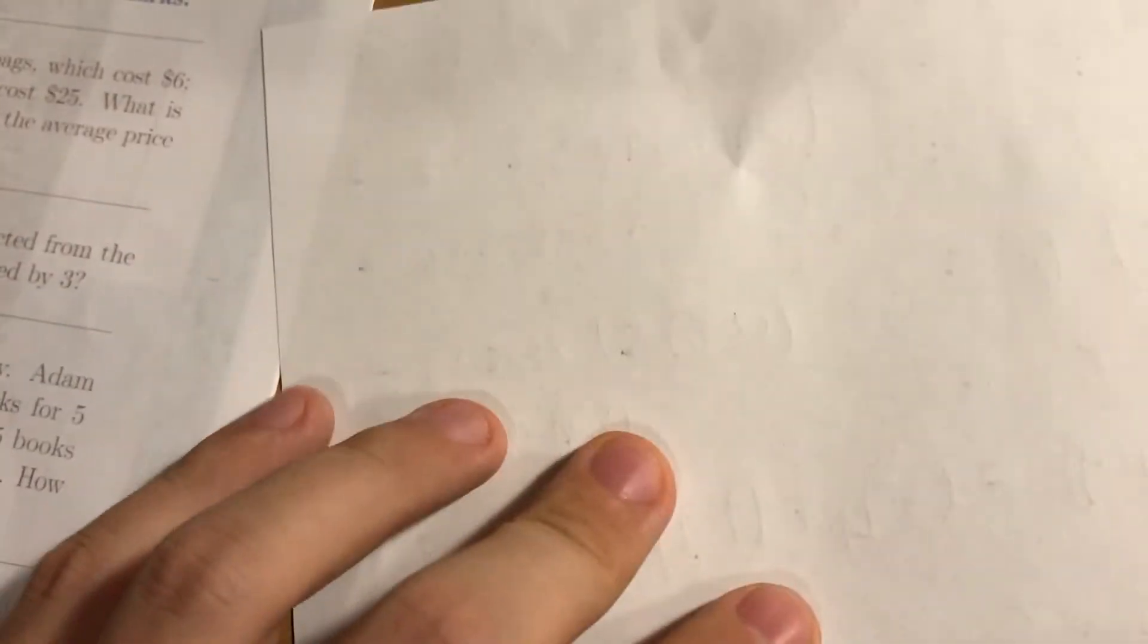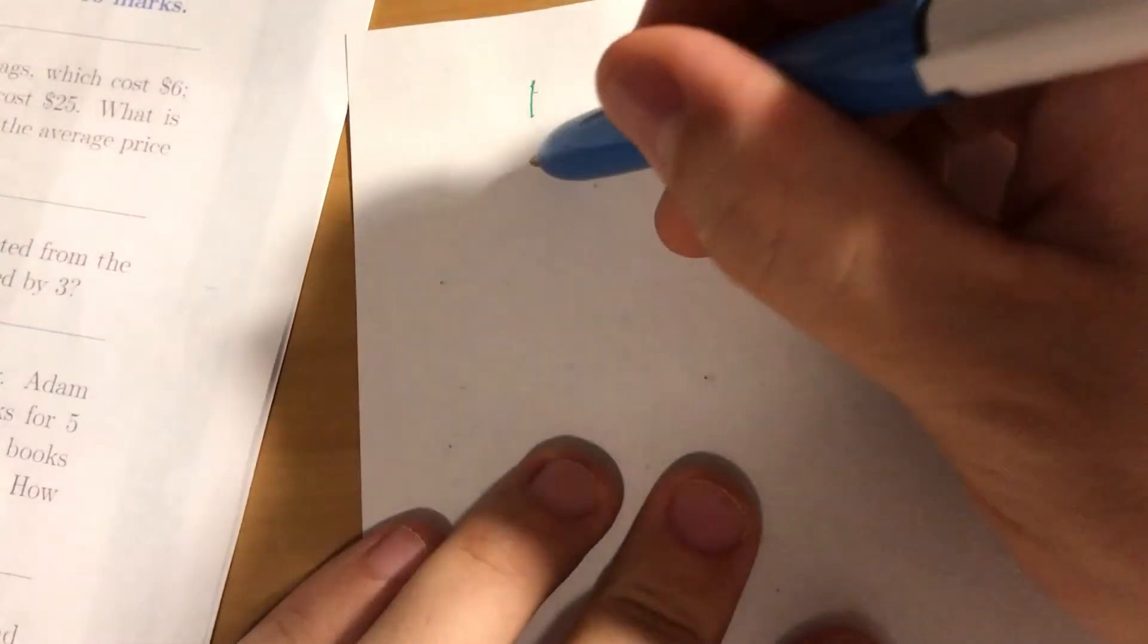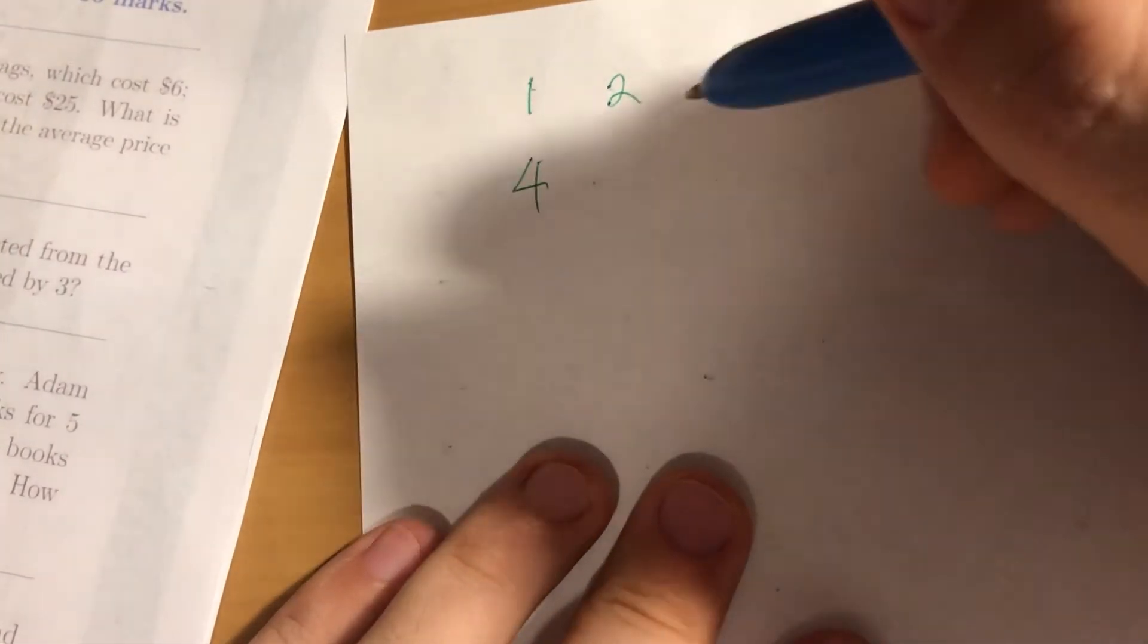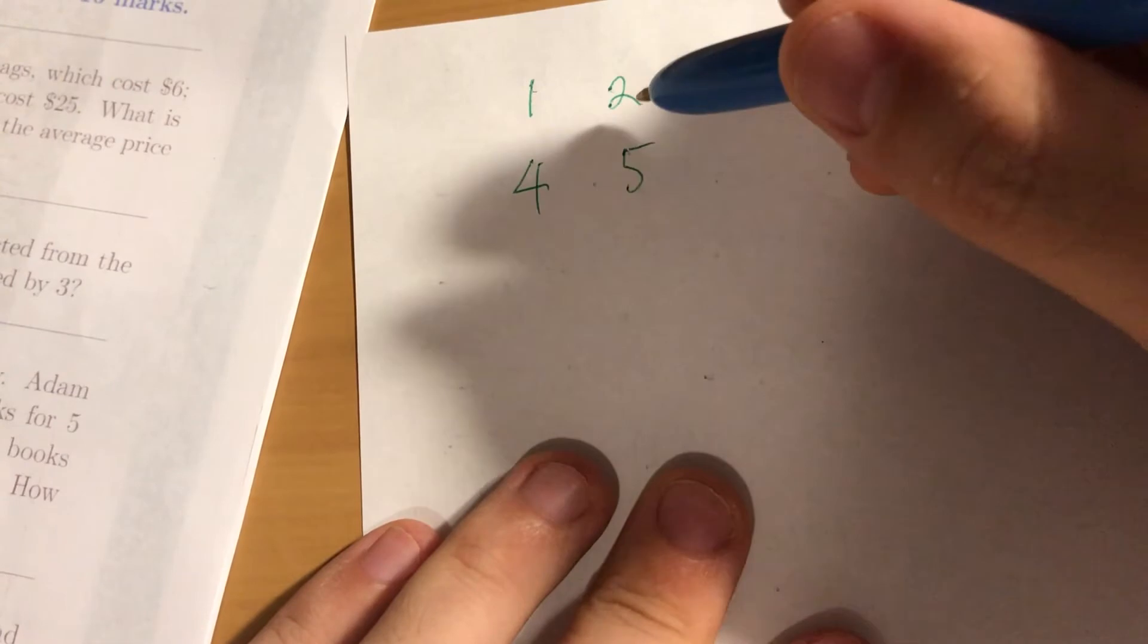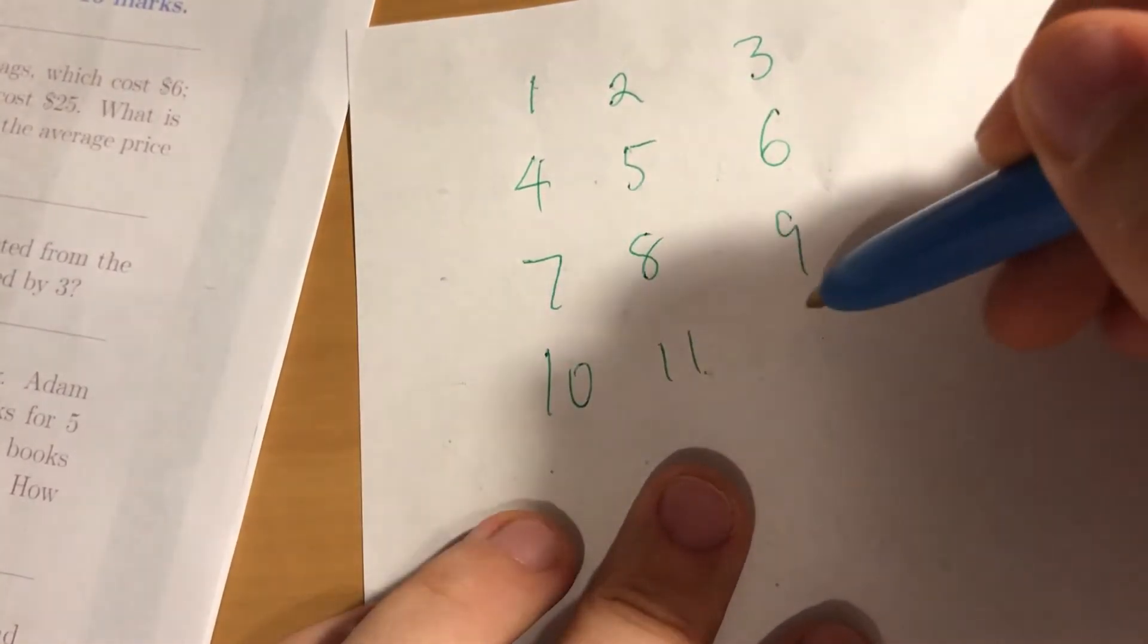So you have the numbers 1, 2, 3, okay? And then I've grouped 4 with 1 because they both have remainder 1 when we divide by 12. 5 with 2, 6 there, 7, 8, 9, 10, 11, 12.